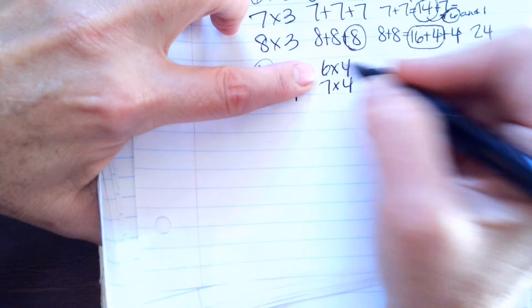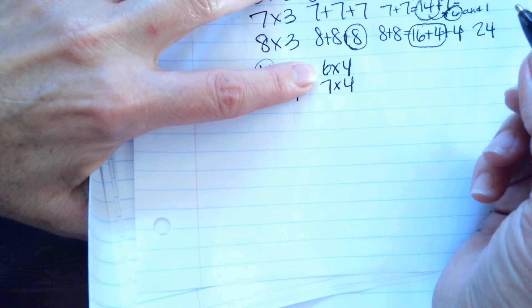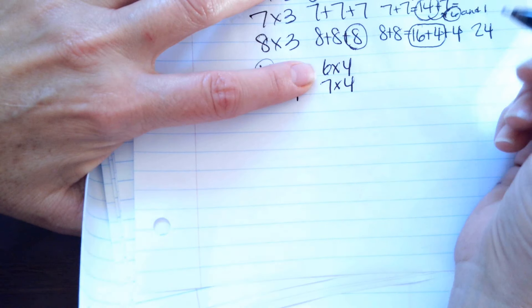6 doubled is 12 and 12 doubled is what's 12 plus 12? 24.